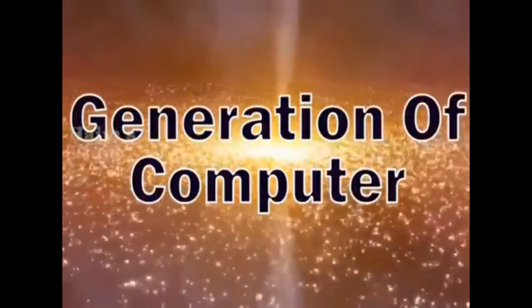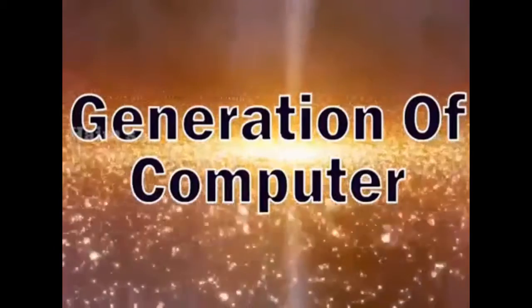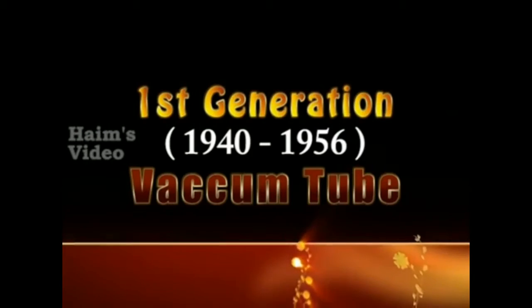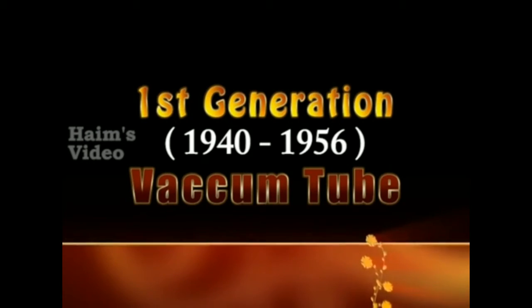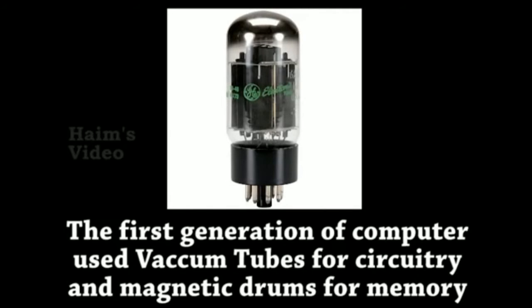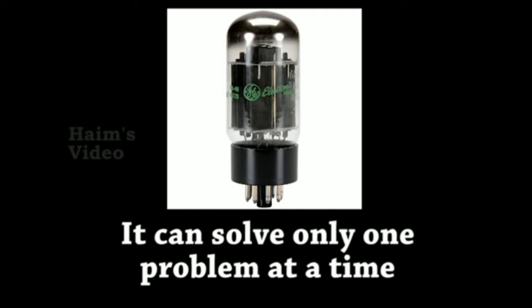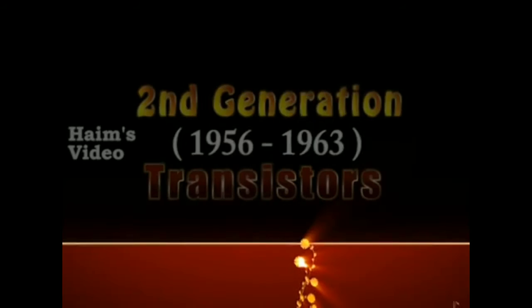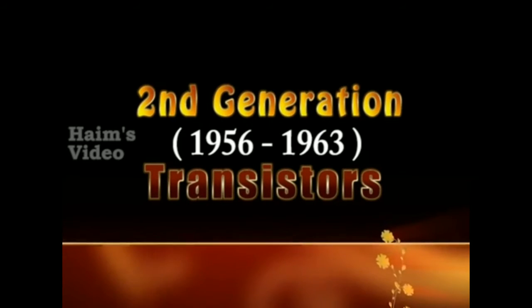Generations of computers. First generation, from 1940 to 1956 — vacuum tubes. The first generation of computers used vacuum tubes for circuitry and magnetic drums for memory. It could solve only one problem at a time.